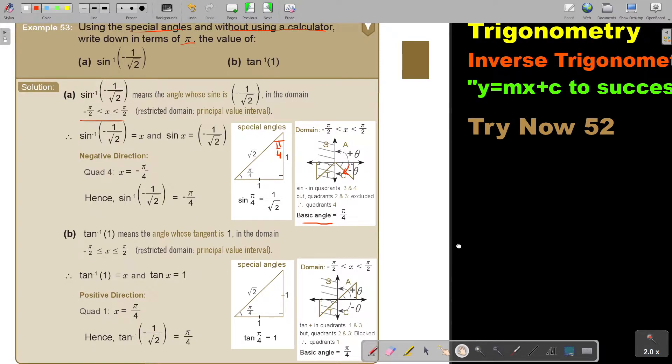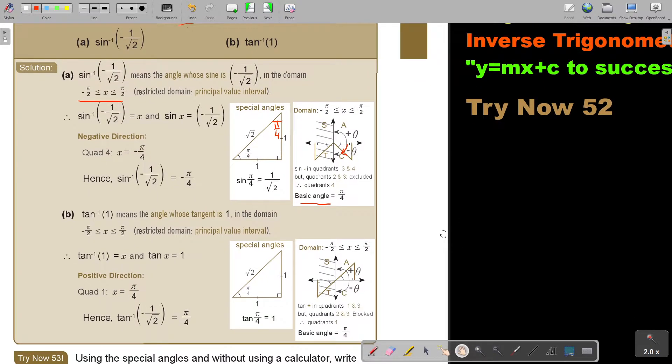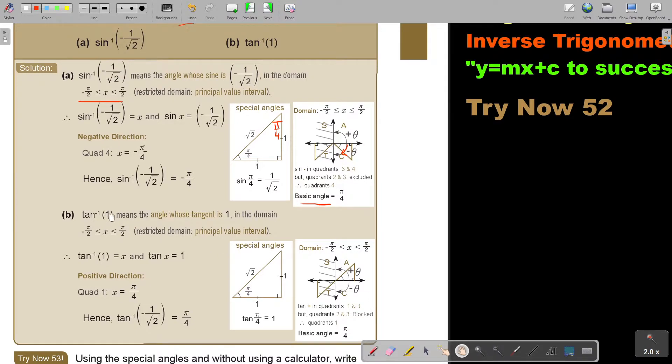If you look at this one, now it's tan and it's 1. Now again, I'm going to use tan is opposite over adjacent. So it's 1, 1. So my basic angle is also pi over 4. Tan is the same as sin. It's negative 90 to positive 90. But now tan, there's a positive in front of the 1. So it's there. So it's just going to be positive pi over 4. And that's going to be your answer. Very easy.